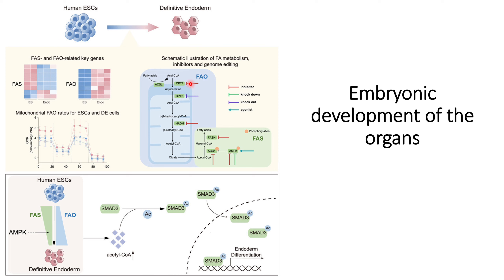Researchers observed that when fatty acid oxidation inhibitors are introduced, they do not see good differentiation of human embryonic stem cells to definitive endoderm. Similarly, when fatty acid synthesis reagents are increased, they also cannot see differentiation to definitive endoderm. However, when they do the reverse — inhibit fatty acid synthesis and upregulate fatty acid oxidation — they can see good endoderm layer formation, which is the primary stage for organ development.